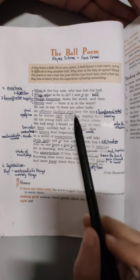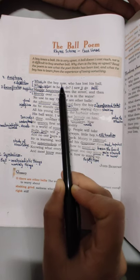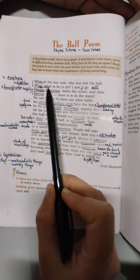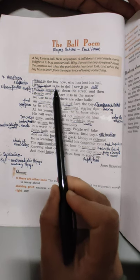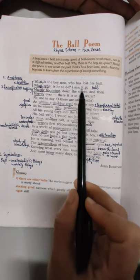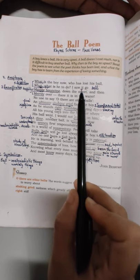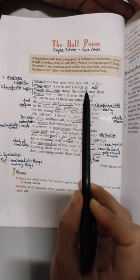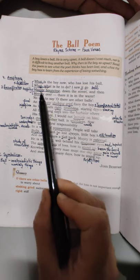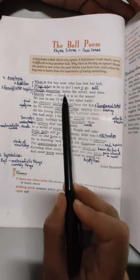So let us start the poem. What is the boy now, who has lost his ball? What is he to do? I saw it go - I means poet. Poet says maine dekha, ball ko jaate huye. Merrily bouncing, happily bouncing means jumping. Ball ko khushi se, happily uchhal kar jaate huye dekha.